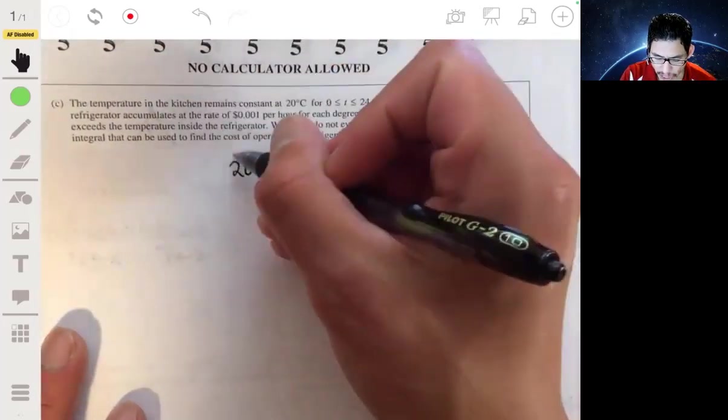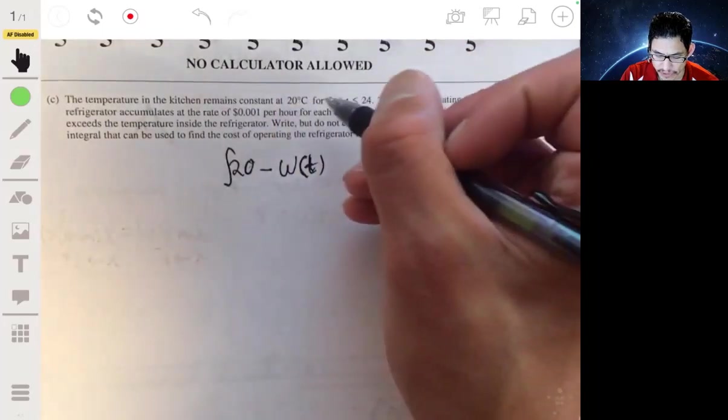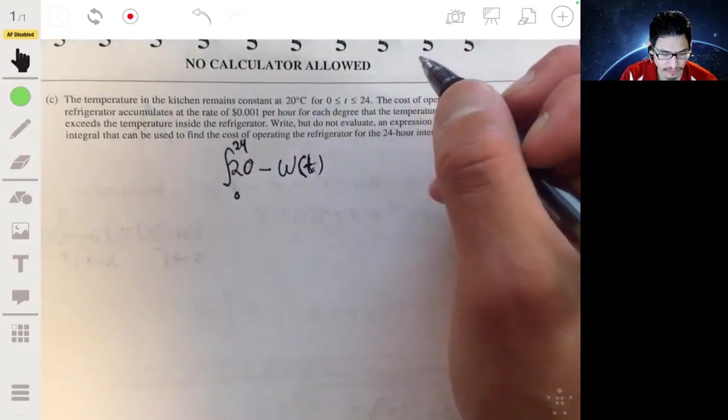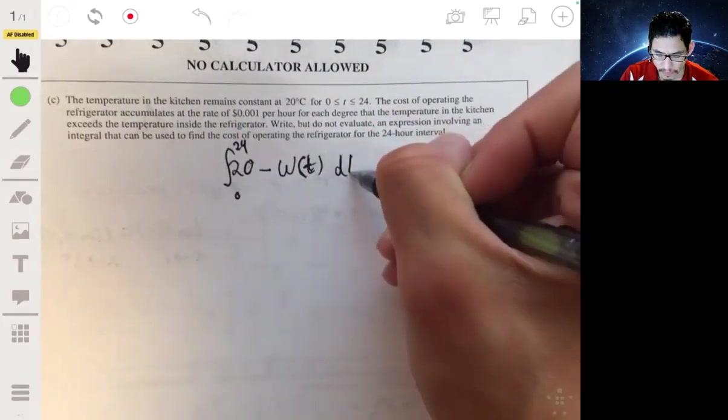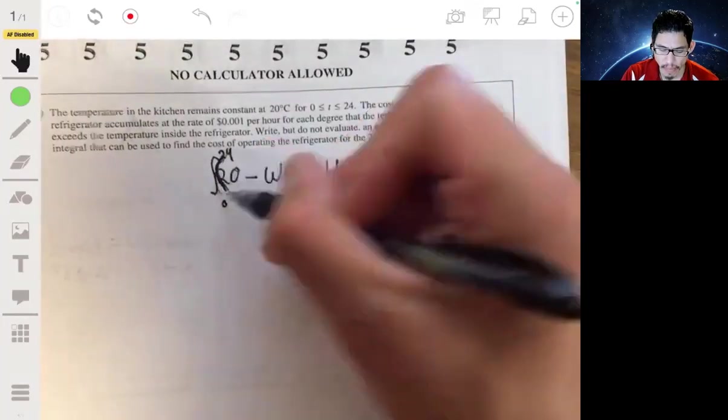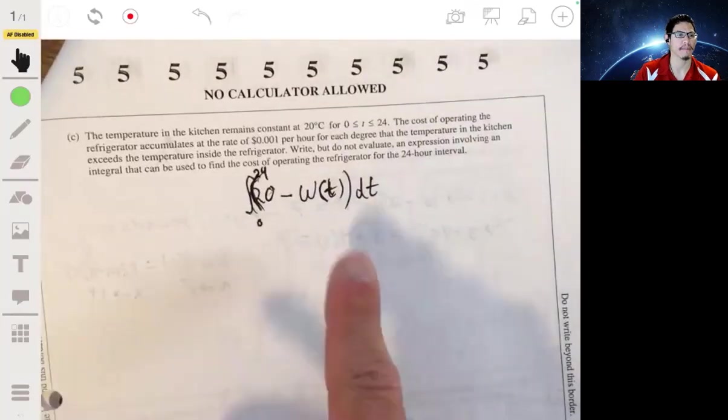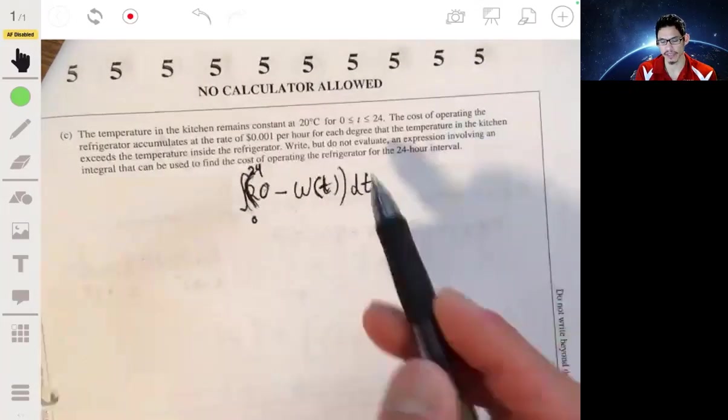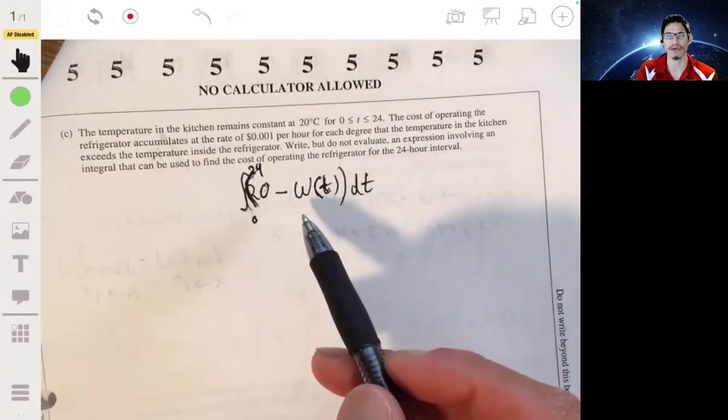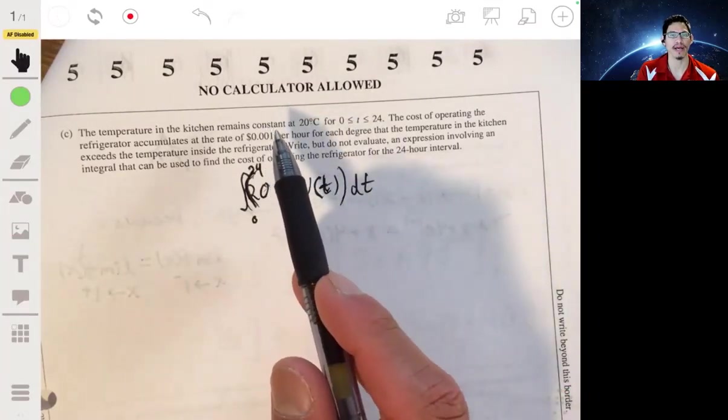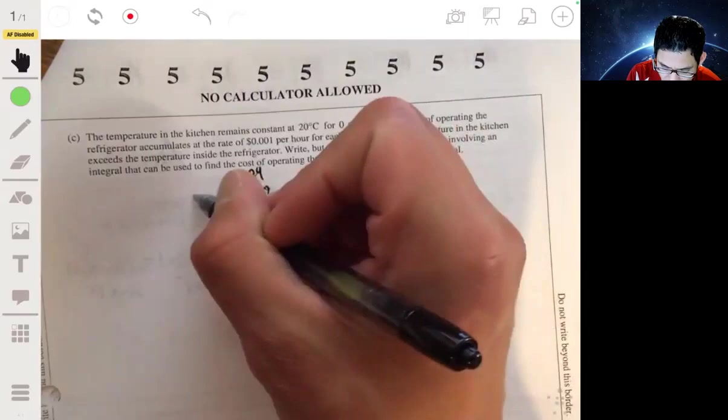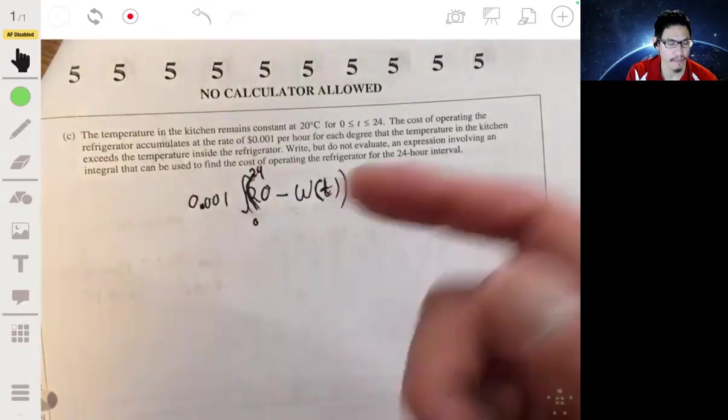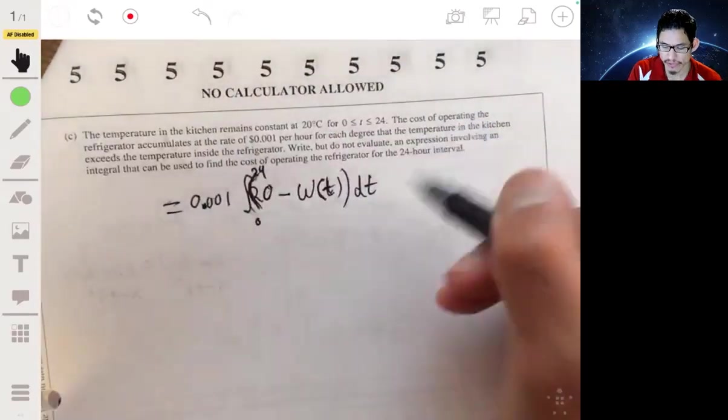Now, since we're looking for all the hours or all the periods of time from 0 to 24 hours, we would take the integral from 0 to 24 of this expression. And whatever this expression is, gives us the total number of hours or the total length of time in hours. So, we would get some number. Maybe it's 7, maybe it's 7.1. And then we would multiply that number by this. So, it would just be 0.001 times that.